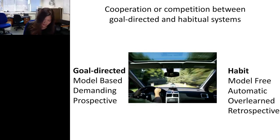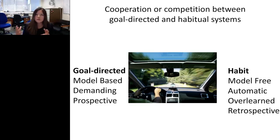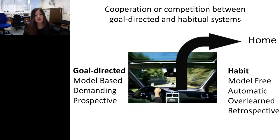When we think about the decisions that we make, it's actually a competition between strategies — either the goal-directed system or the habitual system — and they exist in parallel, cooperating or competing. For example, say you're driving in your car and you always turn right to go home. You've been doing this for 20 years, and that becomes overlearned and habitual.